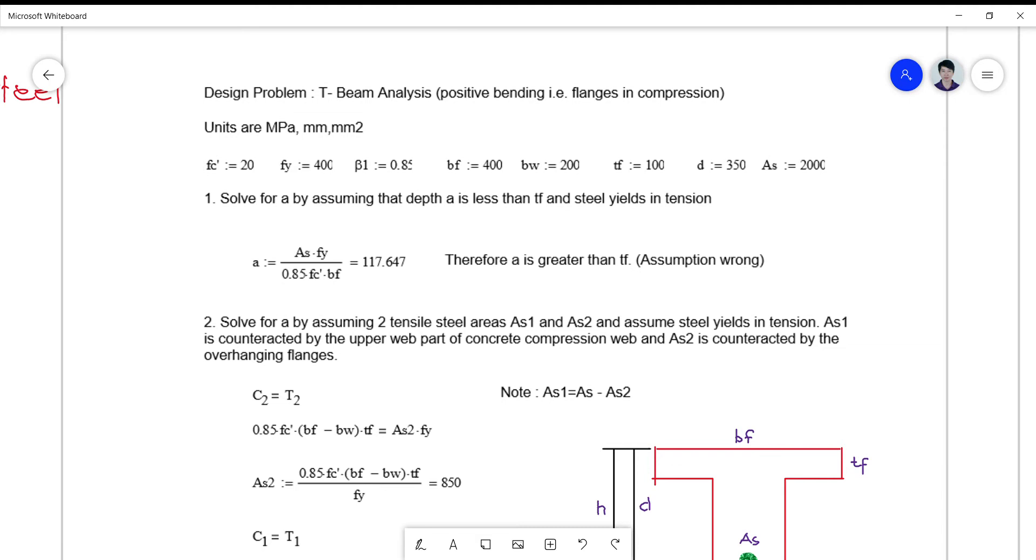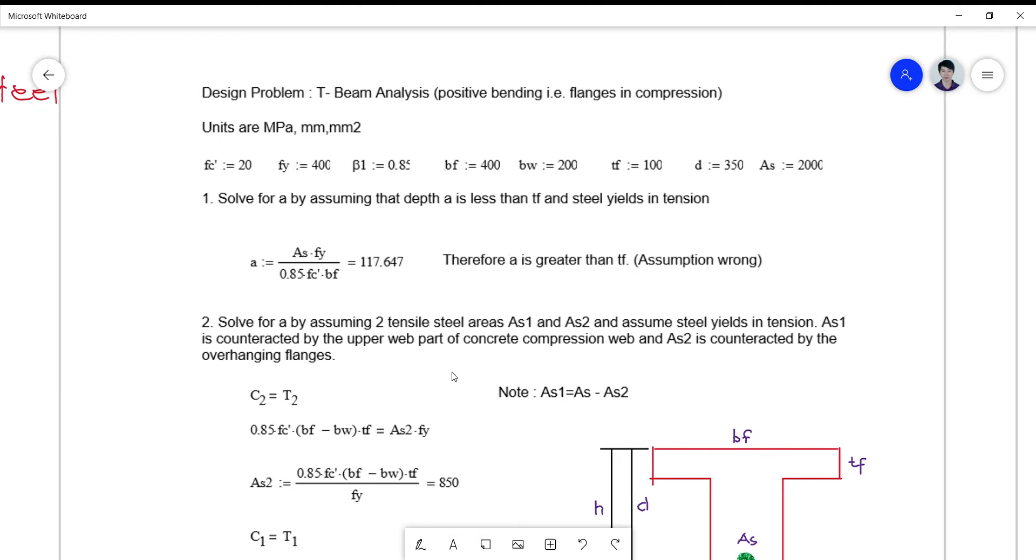Okay, so I will now be giving you an example of a T-beam problem and compare it later to a doubly reinforced beam problem. So I have here a T-beam which is subjected to a positive bending moment, meaning to say that the flanges are in compression, and the units of the material properties and dimensions that are here are consistent in terms of megapascal, millimeter, and millimeter square.